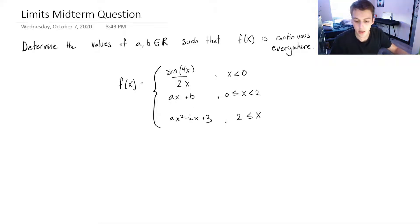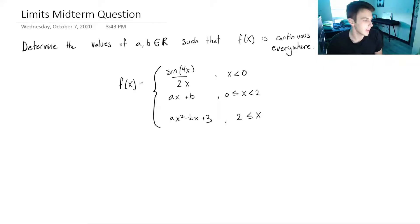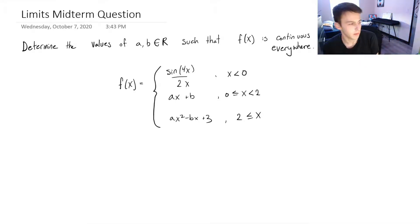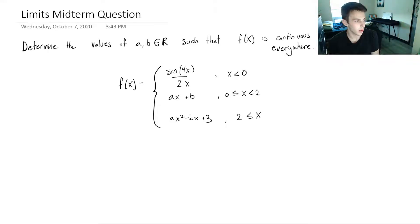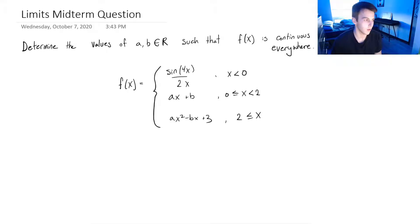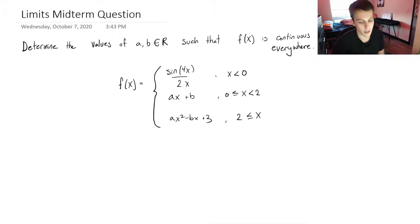Hey guys, I wanted to take a look at a question from one of my midterms when I was taking calculus. It's a limit question which uses a bunch of different properties about evaluating limits, combines it with a system of equations where you're solving for unknowns A and B, and it also throws in some continuity. So let's take a look at this question.